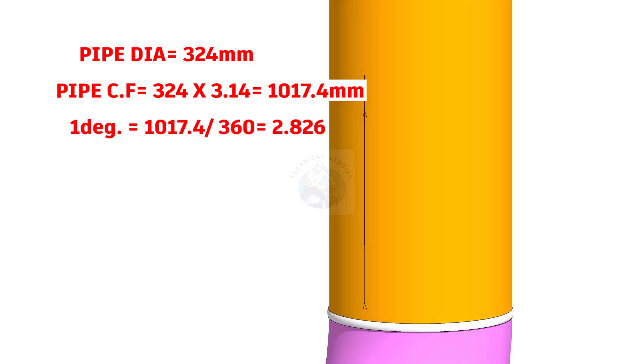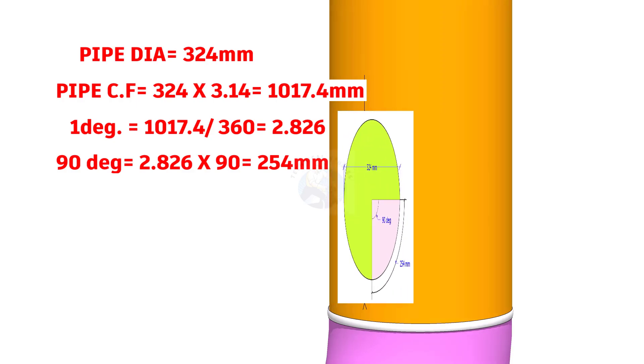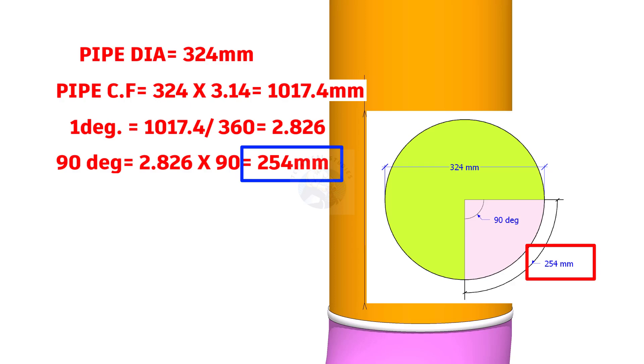1 degree equals 1017.4 divided by 360 equals 2.826. 90 degree equals 2.826 multiplied by 90 equals 254 millimeters. This is the arc length for 90 degree in a 324 millimeters diameter circle.